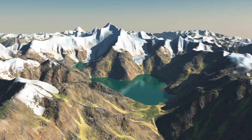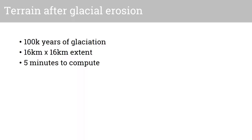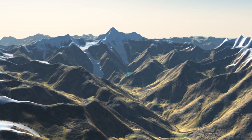Despite the tremendous importance of glacier erosion, it has not been reproduced so far in computer graphics due to the complexity of modeling the ice flow. We introduce fast models for the evolution of glaciers, and we couple them with geomorphologically validated erosion laws. This allows us, for the first time, to simulate glacially eroded landscapes.